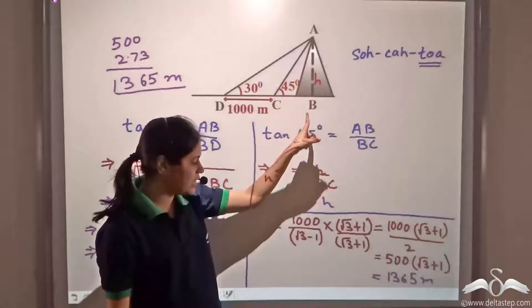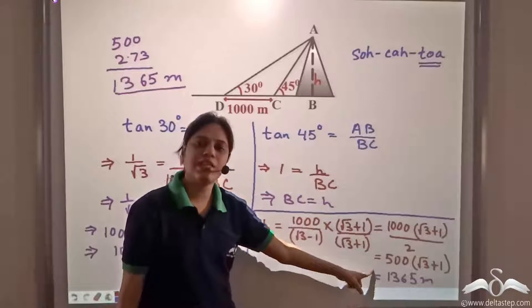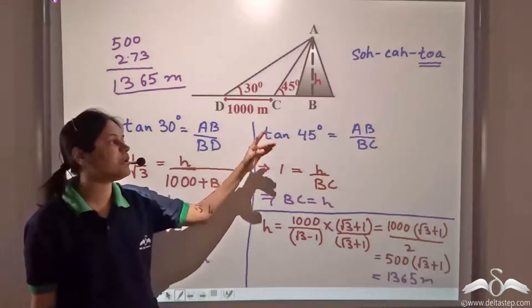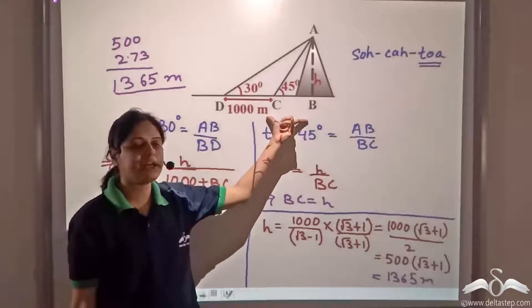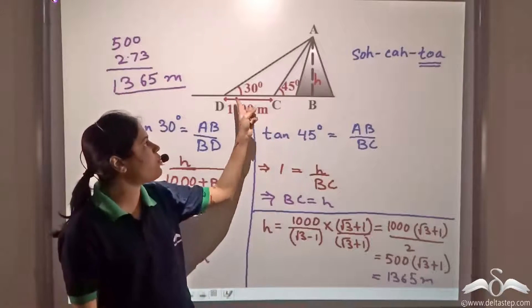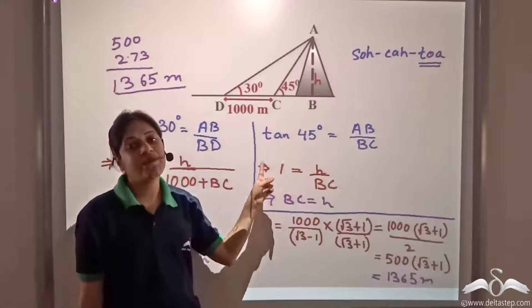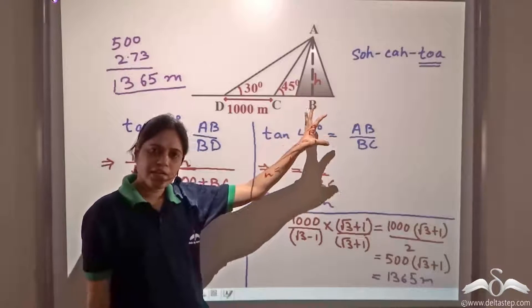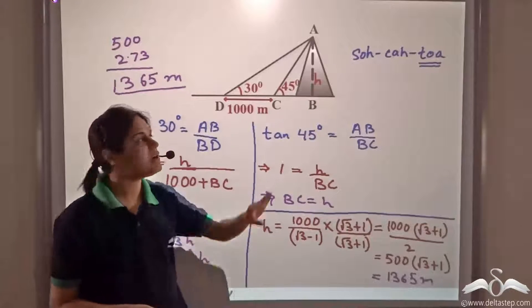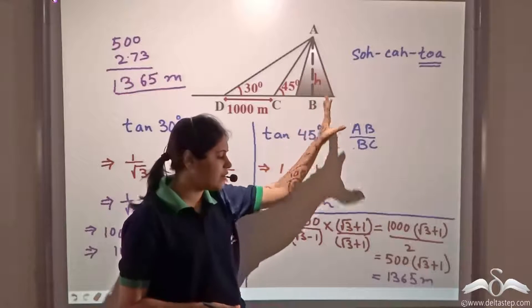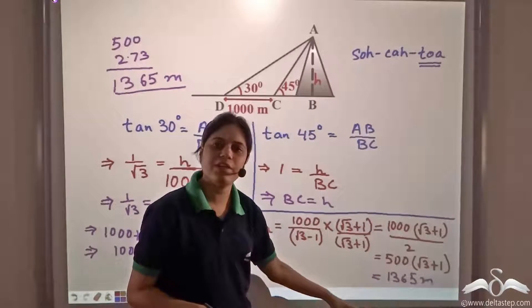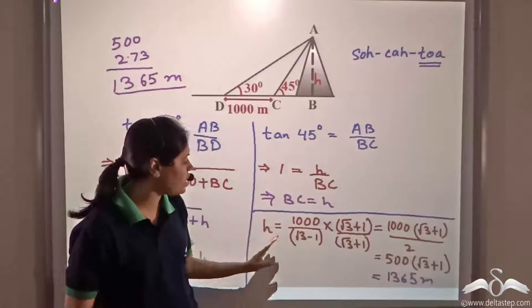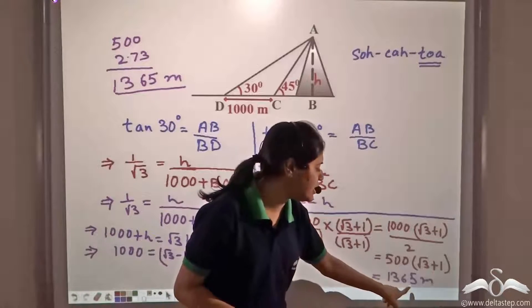So you can see how we can calculate the height of mountains using the appropriate trigonometric ratios, even without calculating the horizontal distance from the point of observation to the foot of the mountain. An important thing to note here is that we have ignored the height of the observer, because the height of the observer is very small compared to the height of the mountain. So the height of the mountain H is one thousand three hundred and sixty-five meters.